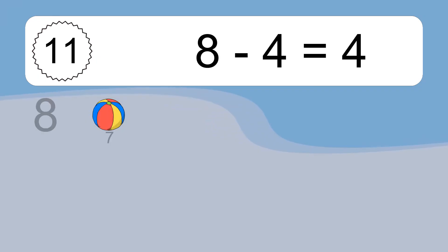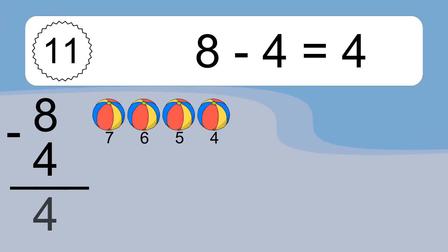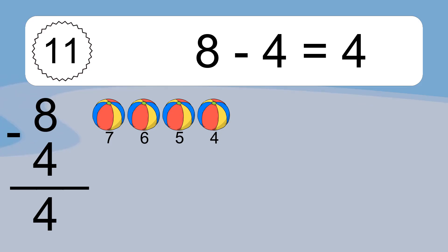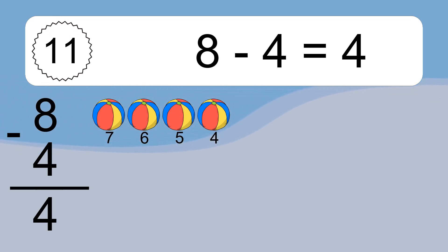8 minus 4 equals what? 8 minus 4 equals 4. Let's count it. 7, 6, 5, 4.